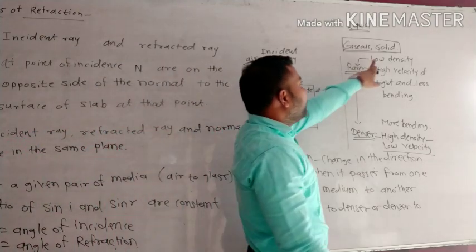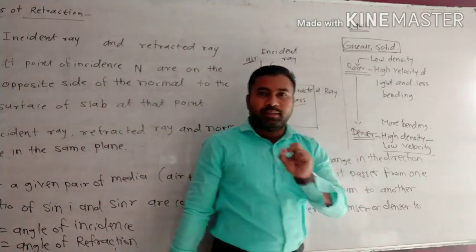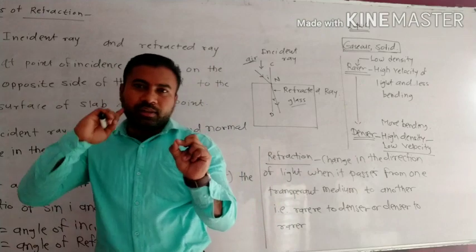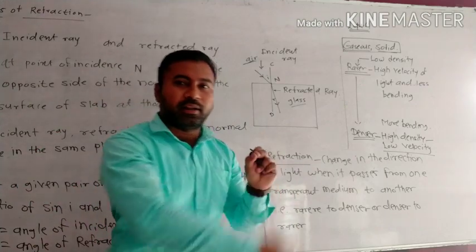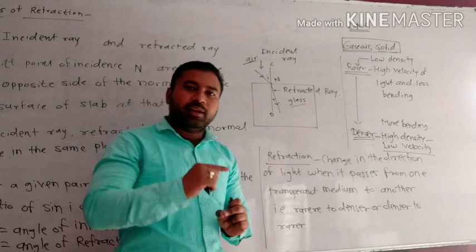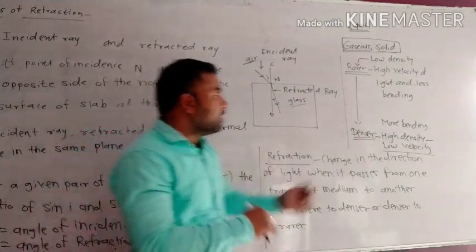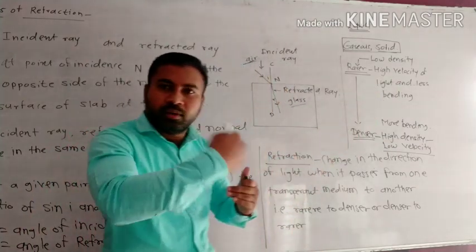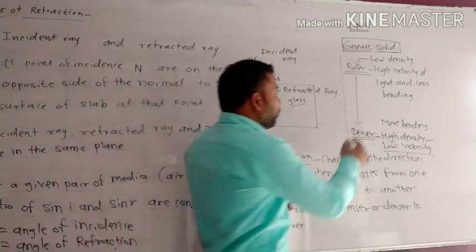The velocity of light in air is more — that is, high velocity.